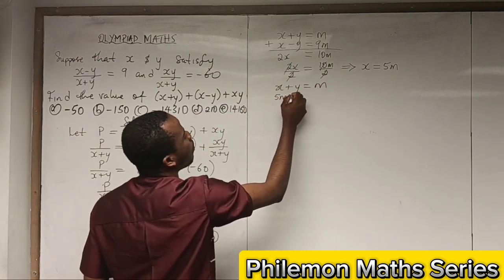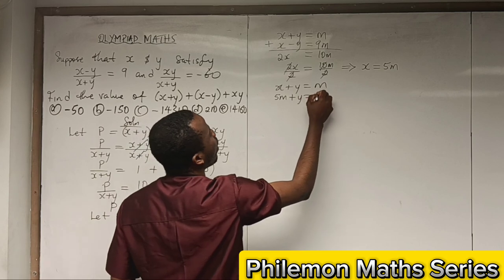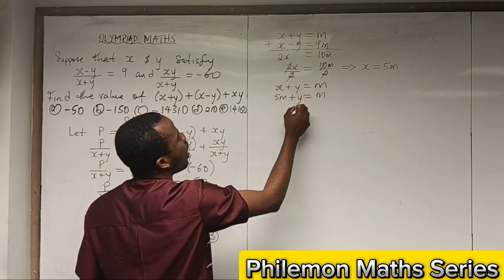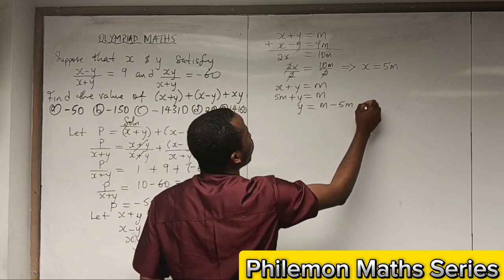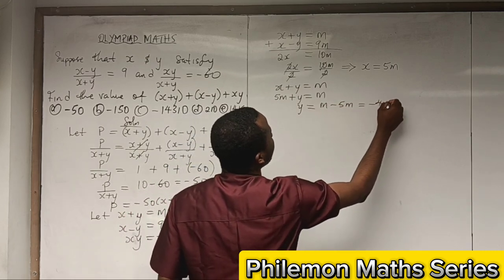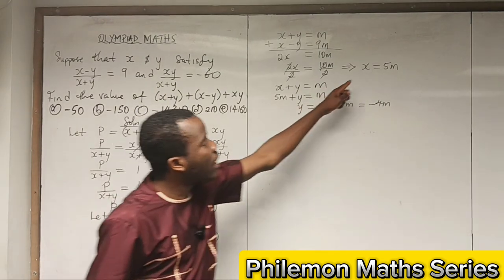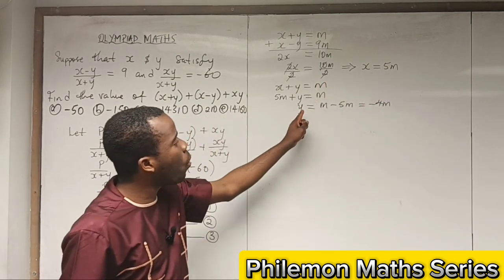So x + y = m. Since x is 5m, we have 5m + y = m, so y = m - 5m = -4m. We have x = 5m and y = -4m.